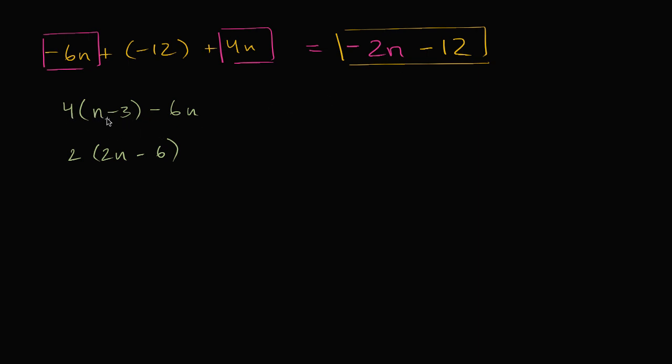Let's see these ones, these down here. So if I distribute the four, I get four times n is four n. And then four times negative three is minus twelve. And then we are going to subtract six n. So minus six n.